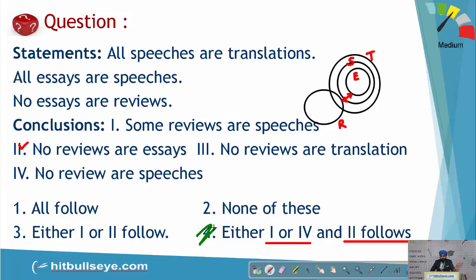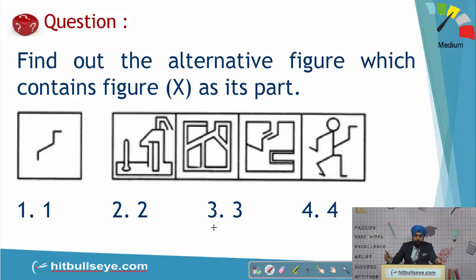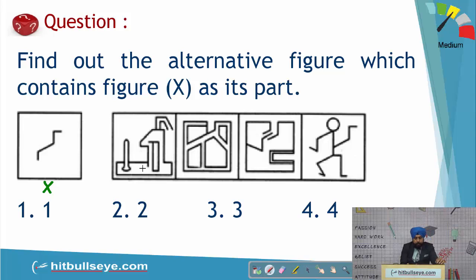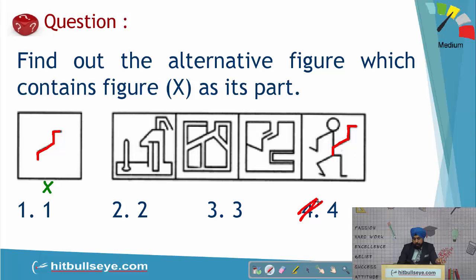In this question, you have to see which option figure contains figure X as its part. The given figure X is shown here. When you check the options one by one, you can see this shape is very much visible in the fourth option. So the answer becomes the fourth option.